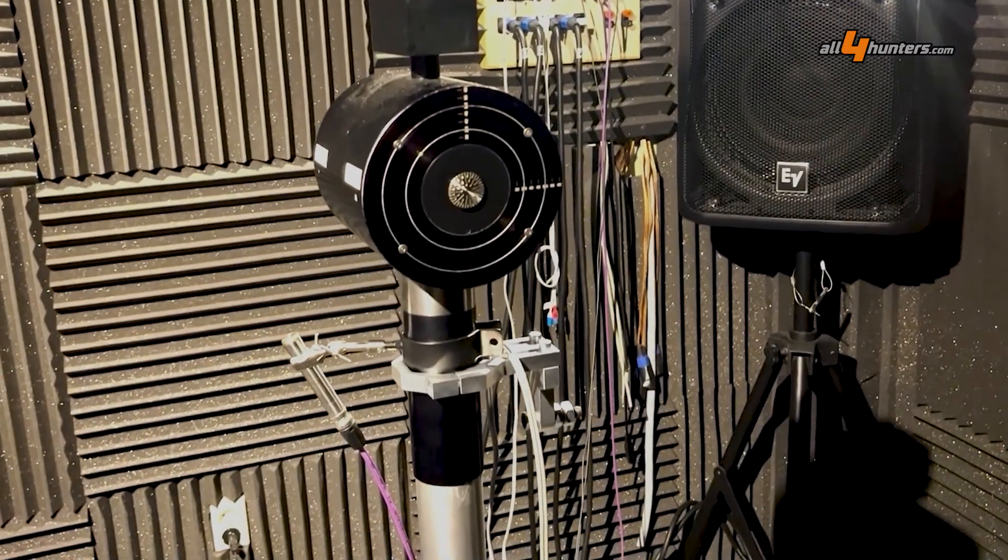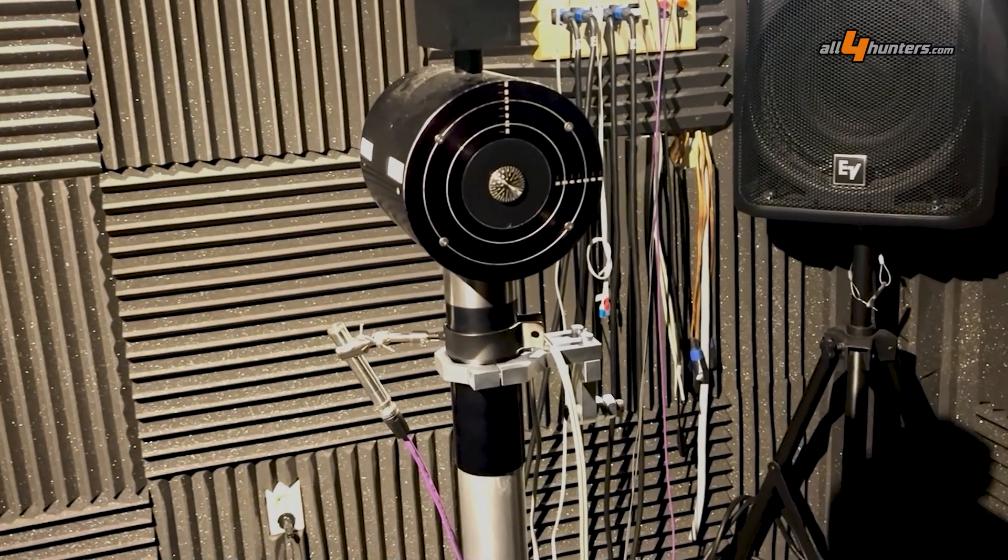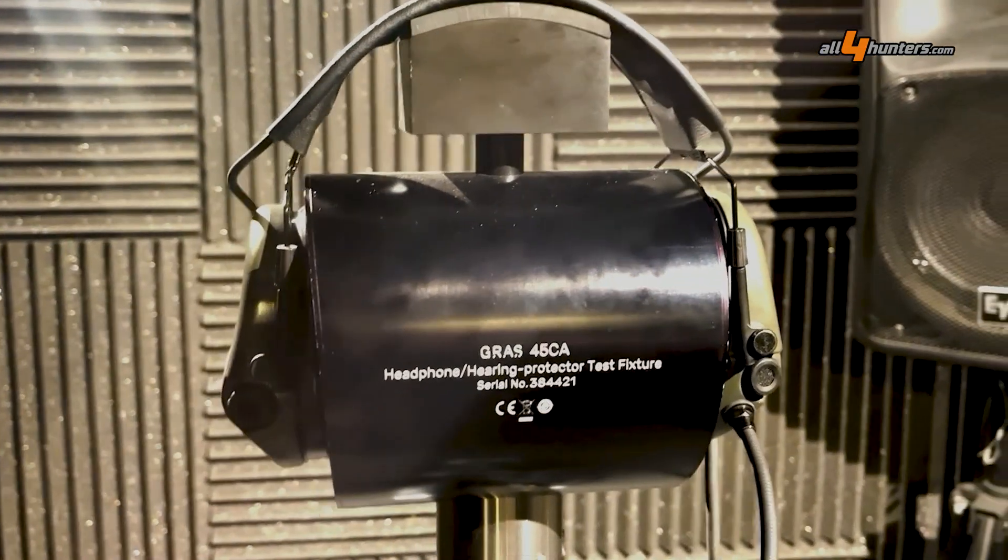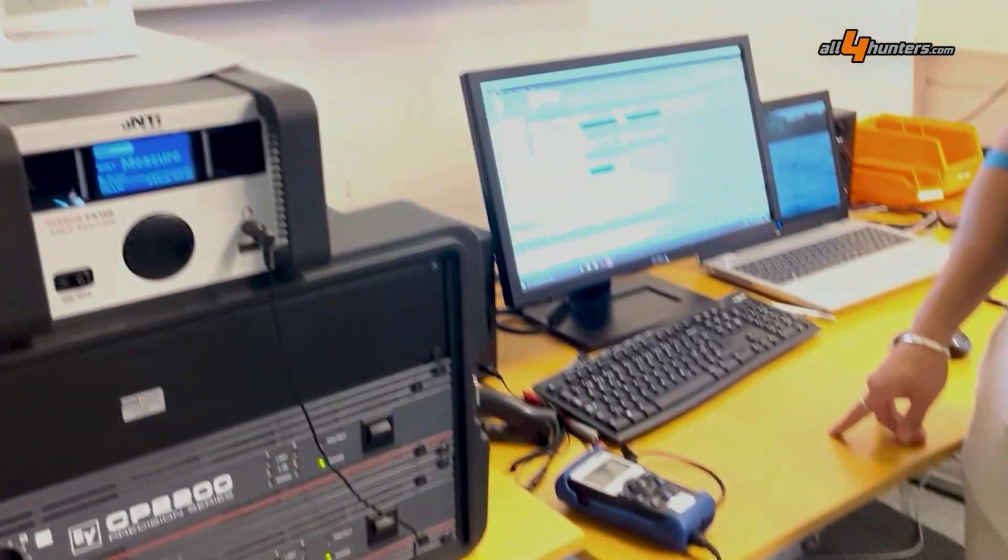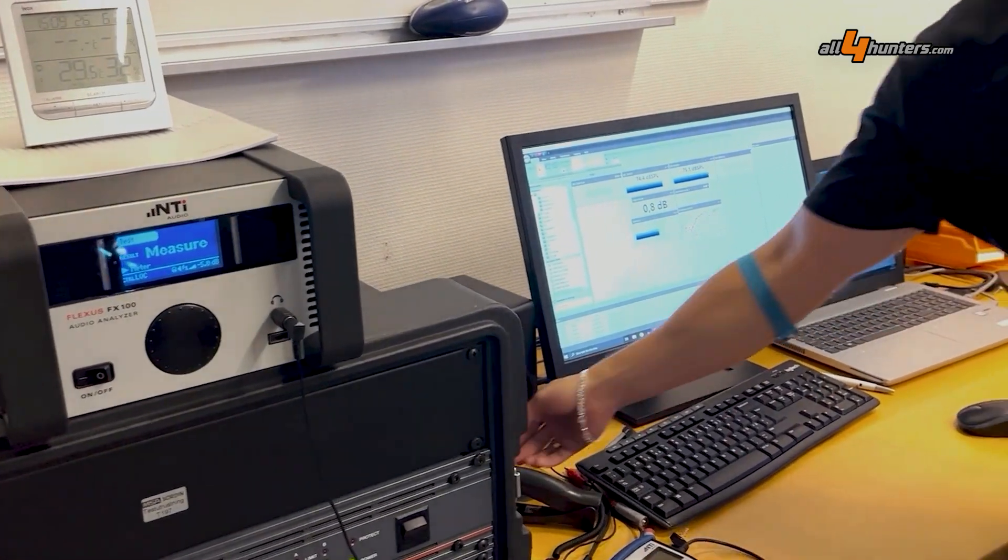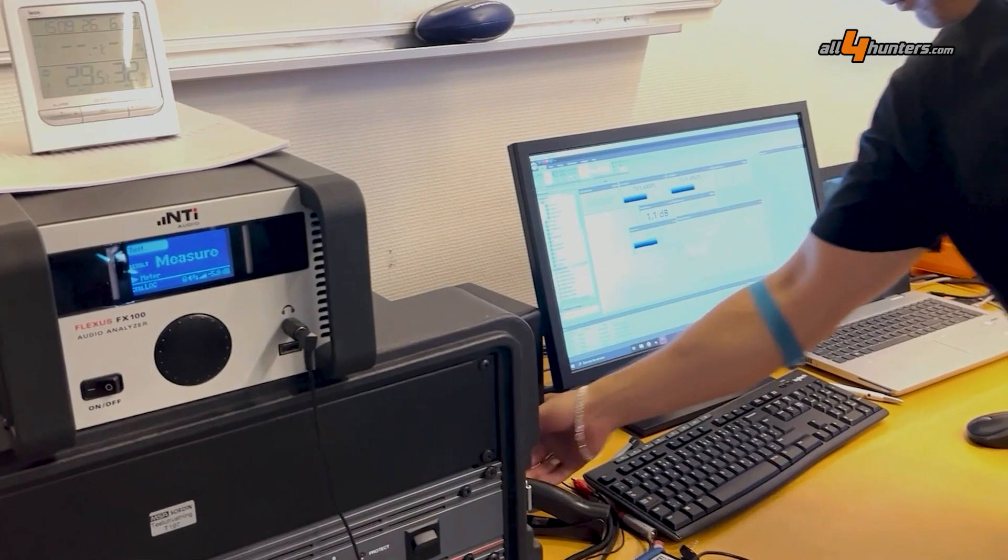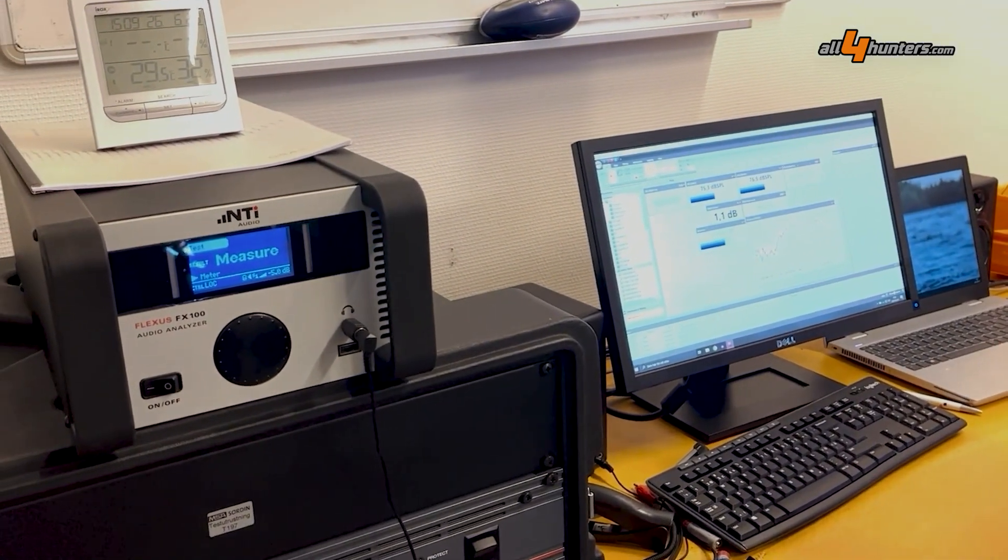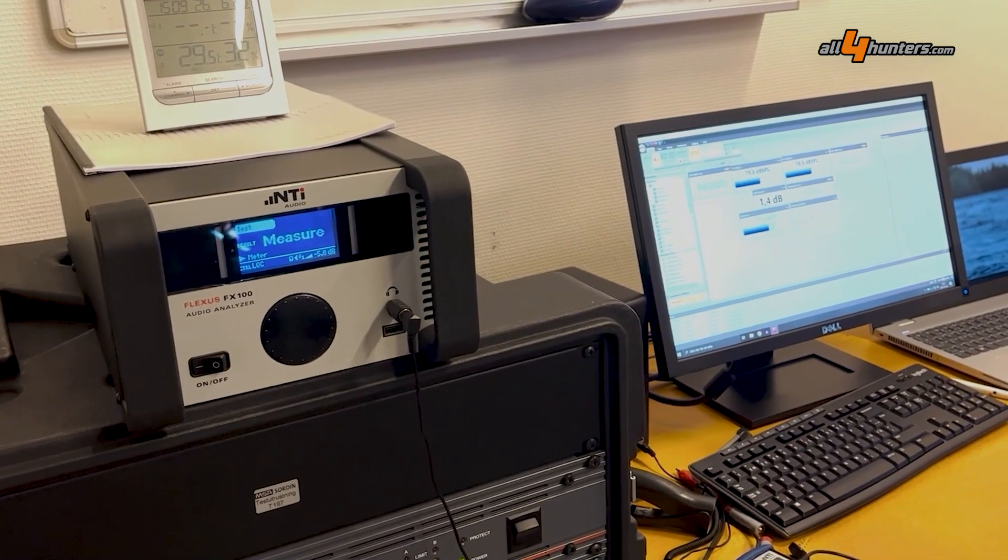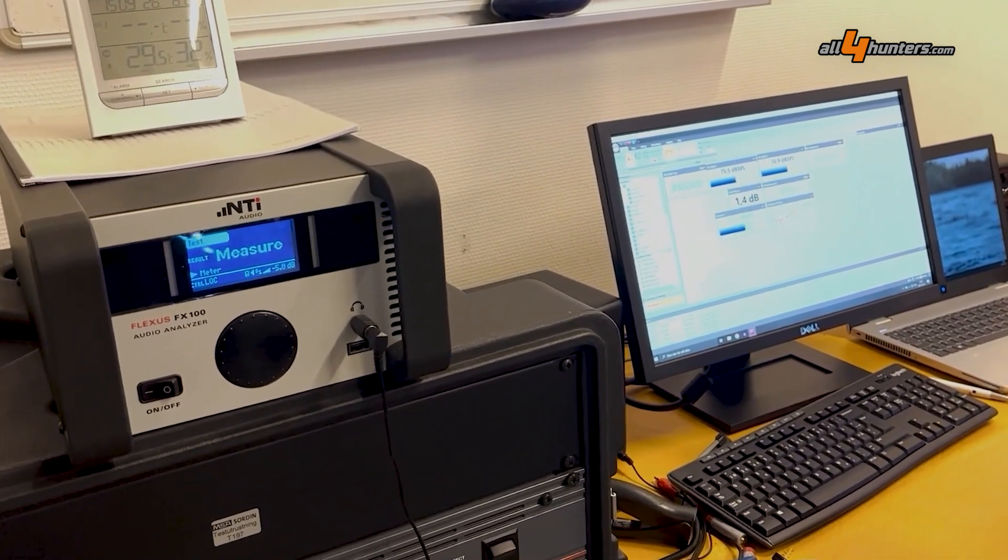Hearing protections from each batch are checked in the laboratory. Various measuring instruments, audio analyzers, and programs are available for this purpose. The hearing protector is placed on a special holder in the soundproof room we have just seen. Meanwhile, the technician checks whether the hearing protection meets the requirements.